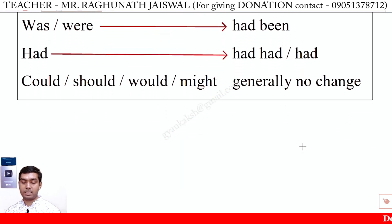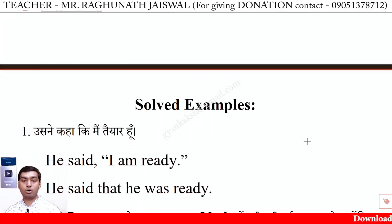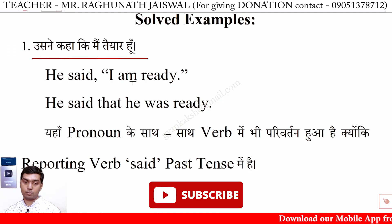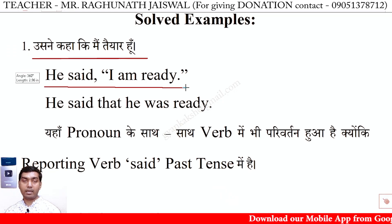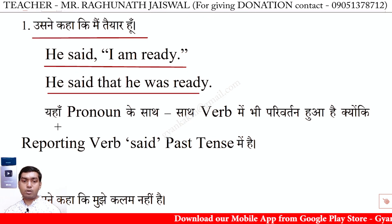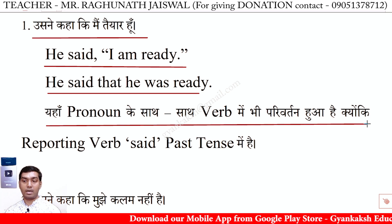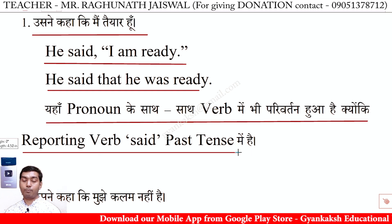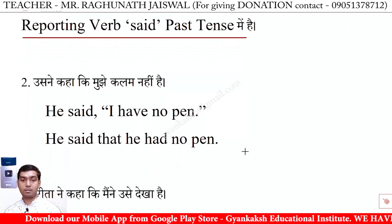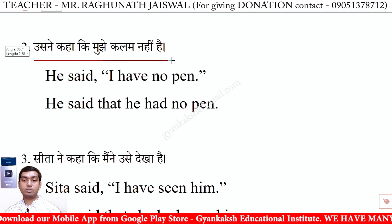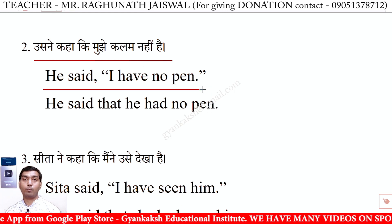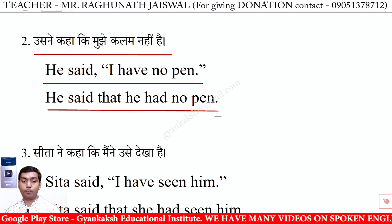Let's look at some more solved examples to clarify the concept. Us ne kaha ki mein taiyaar hoon. He said, 'I am ready.' He said that he was ready. Here both the pronoun and verb changed because the reporting verb 'said' is in past tense. Us ne kaha ki mujhe kalam nahin hai. He said, 'I have no pen.' He said that he had no pen.